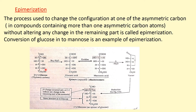When glucose is treated with bromine water — an aqueous solution of bromine — it is oxidized to gluconic acid. On treatment with pyridine, the configuration of the alpha carbon atom or second carbon atom is changed. Then it is heated whereby dehydration occurs and a gamma lactone is formed. When the gamma lactone is reduced by sodium amalgam, mannose is formed, which differs only at the configuration of the second carbon atom or alpha carbon atom. This entire process is epimerization.